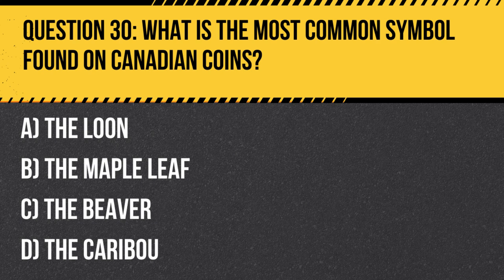Question 30. What is the most common symbol found on Canadian coins? A. The loon. B. The maple leaf. C. The beaver. D. The caribou.